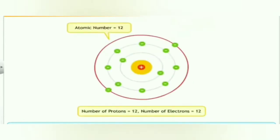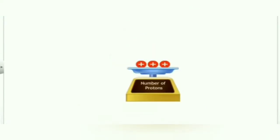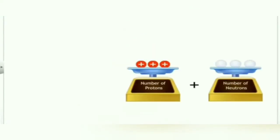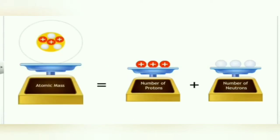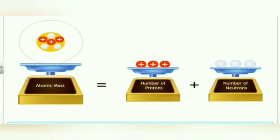For example, if the atomic number of an element is 12, then its atom contains 12 protons and 12 electrons. The total mass of protons and neutrons inside the nucleus is regarded as the atomic mass of an element. Therefore, atomic mass or mass number can be defined as the total number of protons and neutrons present in one atom of an element.